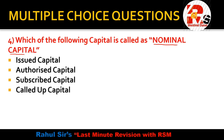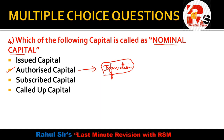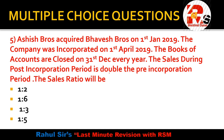Question number 4: Which of the following capital is called nominal capital? Options are: issued capital, authorized capital, subscribed capital, or called-up capital. Nominal capital is the same as authorized capital. Authorized capital only provides information about the maximum amount up to which a company can issue shares. So the right answer is authorized capital.